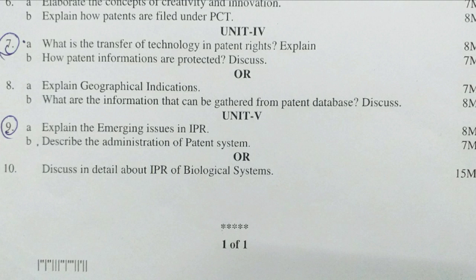Unit 5 — Ninth question A bit: Explain the emerging issues in IPR (8 marks). B bit: Describe the administration of the patent system (7 marks). Tenth question: Discuss in detail about IPR of biological systems (15 marks — direct question). These are the questions given in the February 2024 previous year question paper of Research Methodology and IPR.